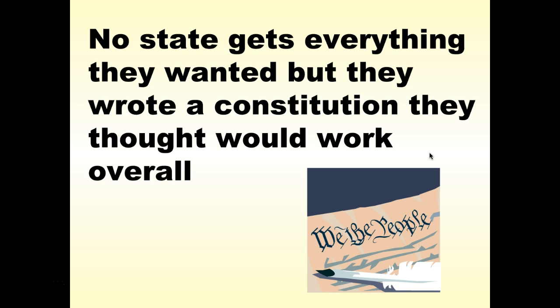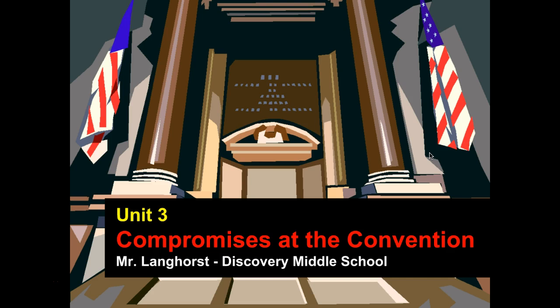In all three of these compromises, no state got everything it wanted, but they did come up with a Constitution that was an improvement over the Articles of Confederation. It's not perfect, but it's something they could work with — and it has been duplicated by many countries around the world. That concludes our section of notes on compromises at the convention.